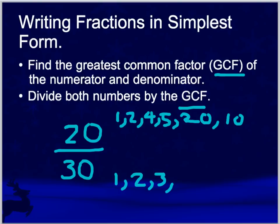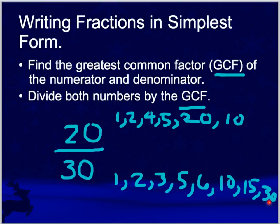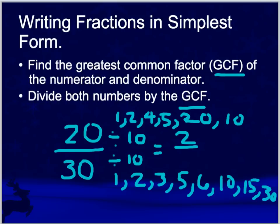The factors of thirty are one, two, three, five, six, ten, fifteen, and thirty. Note that thirty is not divisible by four, so four is not a factor. The greatest common factor of twenty and thirty is ten. So I divide by ten in the numerator and ten in the denominator: twenty divided by ten is two, thirty divided by ten is three. So twenty-thirtieths in simplest form is two-thirds.